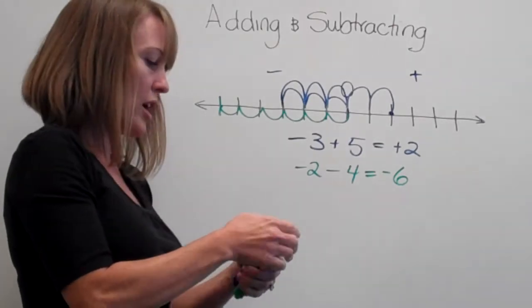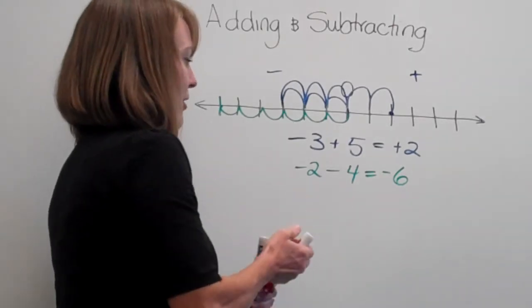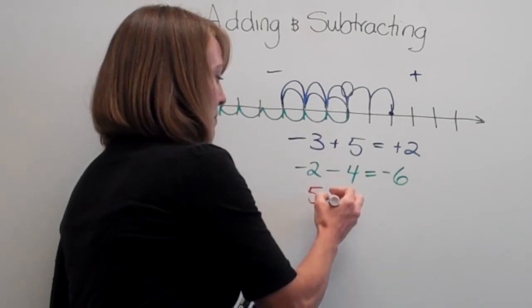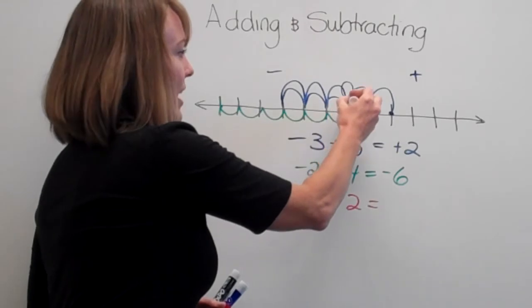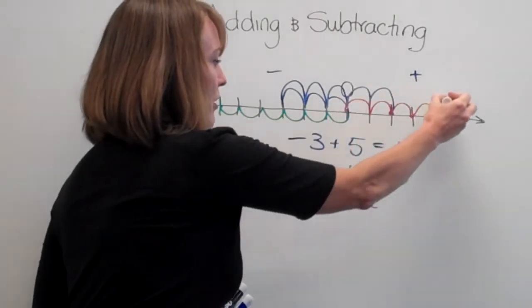And let's do one more. Let's say positive 5 minus 2. So we're going to start here at 0. We're going to go positive 5: 1, 2, 3, 4, 5.